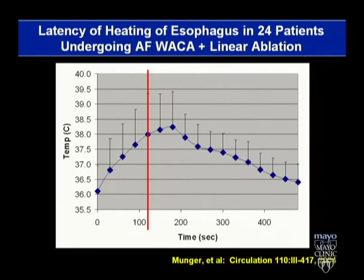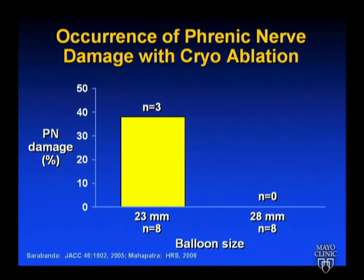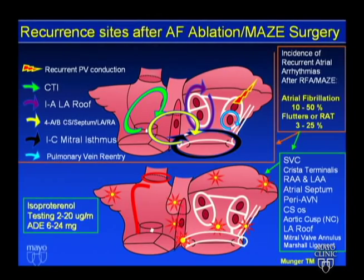They might ask what approaches reduce esophageal injury. Temperature continues to change for about 45 seconds after power is cut — there's a latency. From animal work comparing small versus large cryo balloon: smaller balloon gets further into the vein, achieves better seal and lower temperatures, but those low temperatures from seals deep in the vein are more likely to cause stenosis and phrenic nerve injury.